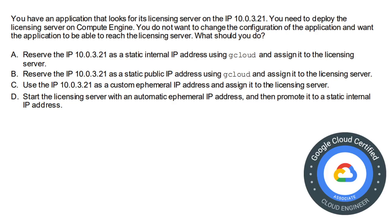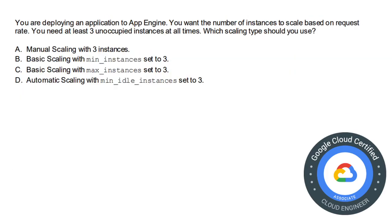Moving on to the next question. You have an application that looks for its licensing server on IP 10.0.3.21. You need to deploy the licensing server on Compute Engine without changing the application configuration. The options are: A) Reserve the IP as a static internal IP using gcloud and assign it to the licensing server; B) Reserve the IP as a static public IP; C) Use the IP as a custom ephemeral IP; D) Start the server with an automatic ephemeral IP and then promote it to static internal. The correct answer is option A: reserve the IP as a static internal IP.